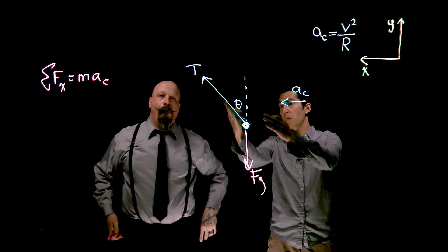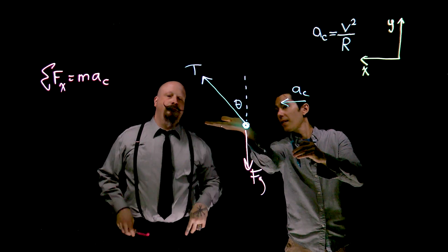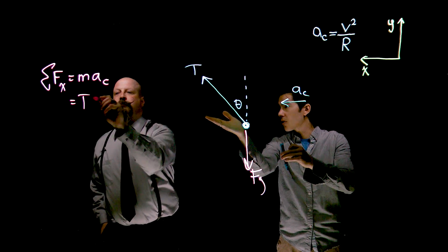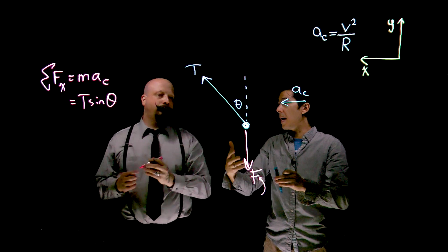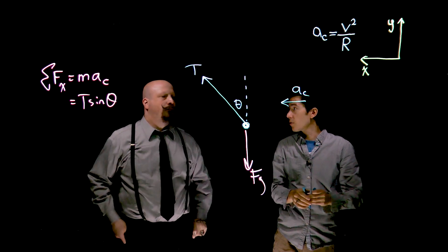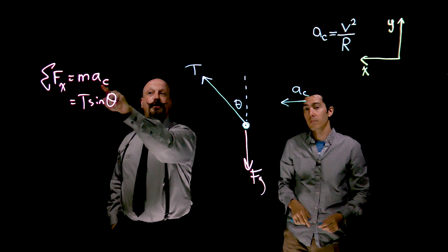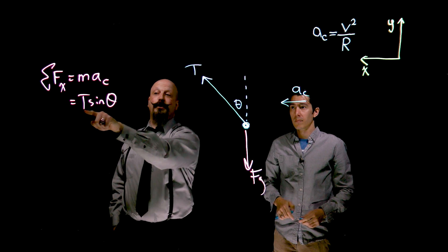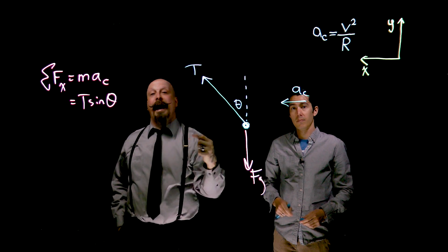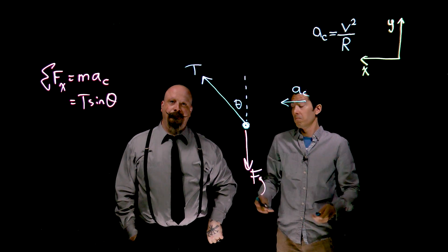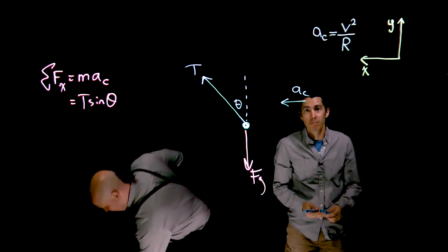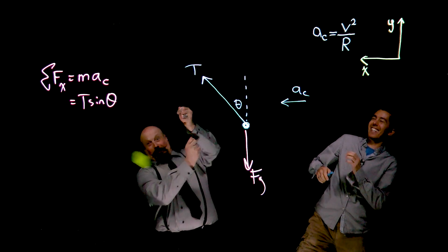Right. So in this case, we would say that T sine theta is acting in the x direction, and that's causing ma, the mv squared over r, centripetal motion. And that's it. You literally have an acceleration towards the center that's defined by the fact that you have a component of the tension acting in that direction. There you go.